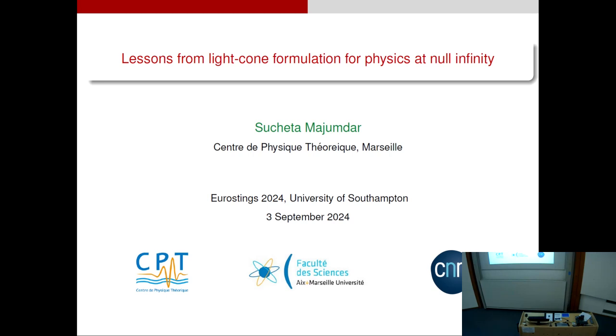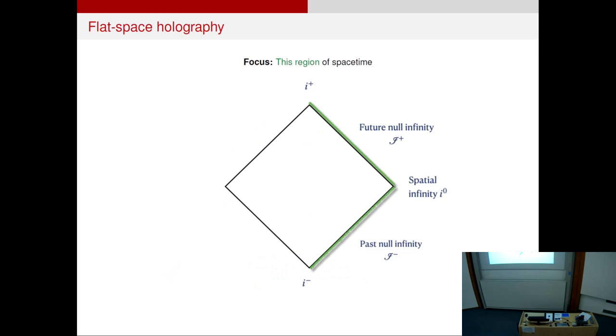Light cone formulation of quantum field theories. And what I will tell you today, it's going to be a very basic talk. I'm not going to talk about gravity or twisters or anything. I will use some very simple examples to highlight certain features of light cone theories that might be relevant for physics at null infinity. And by physics at null infinity, of course, we mean this region of spacetime, the asymptotic region, in the broader context of flat-space holography.